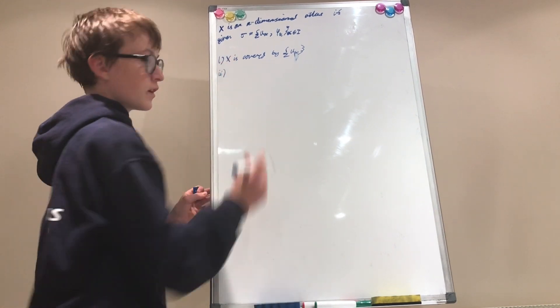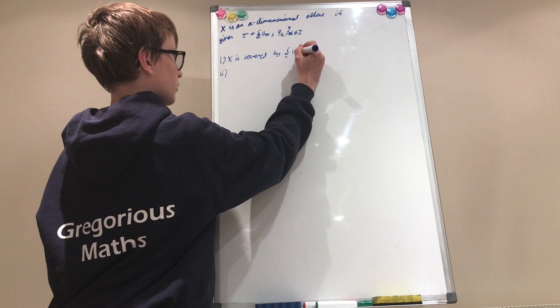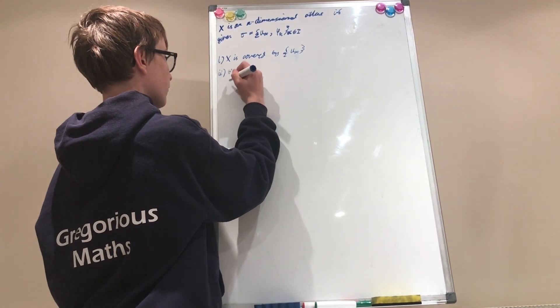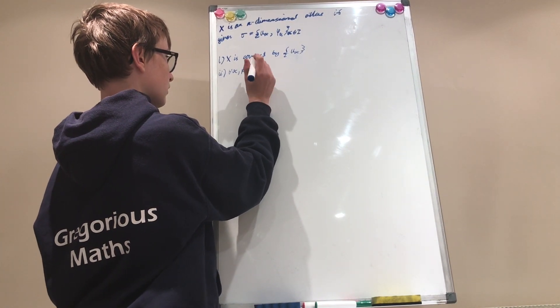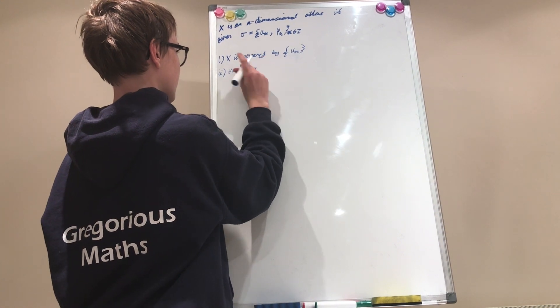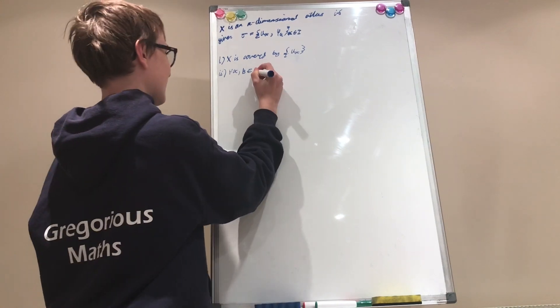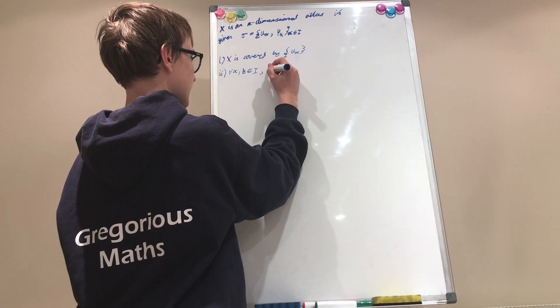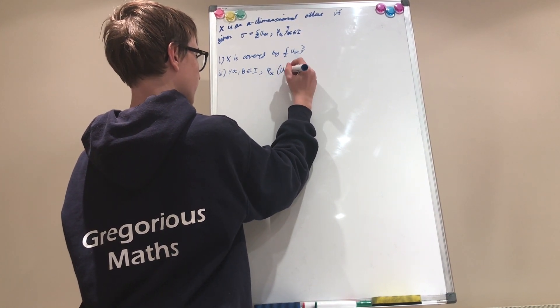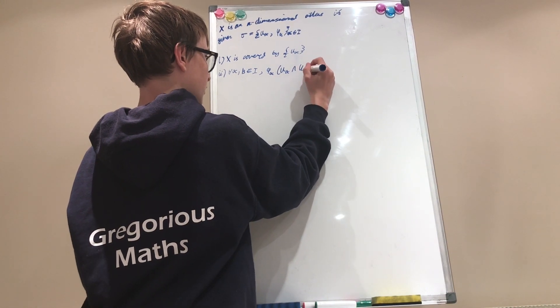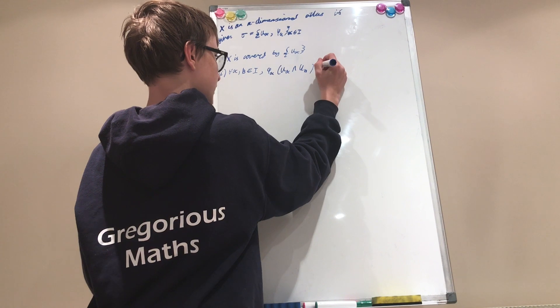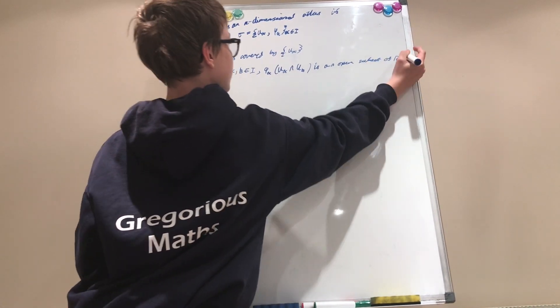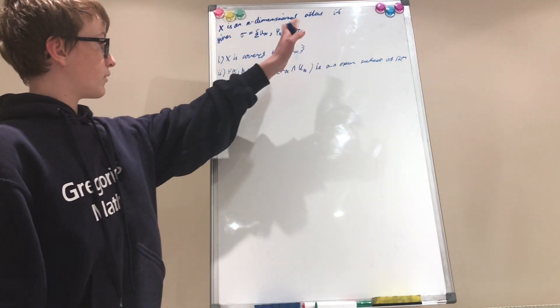Okay. Number two is that, for every alpha and beta in I, phi alpha of U sub alpha intersect U sub beta is an open subset of R^n. And this n here and this n here are exactly the same. Okay.